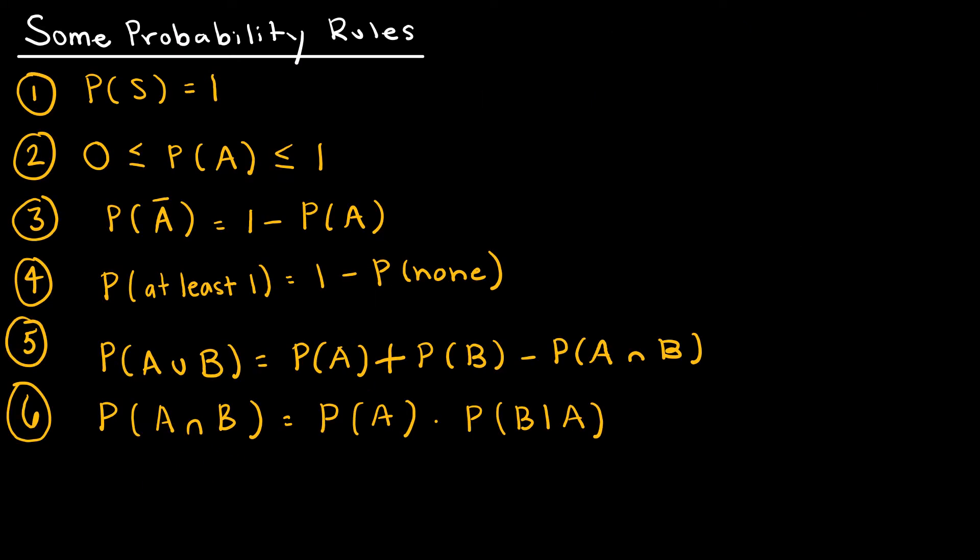I want to look at some of the probability rules with you. Some of these we'll talk about in more detail in this video, and some in the next video. But I wanted to put them all on one side for you for easy reference. Number 1 is the probability of all events in the sample space is equal to 1. That's pretty straightforward. We know that probabilities, and this is rule 2, have to be between 0 and 1.